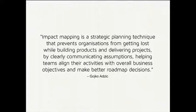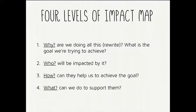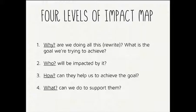Human minds tend to see only one path from beginning to end, but there are multiple alternative ways. Impact mapping has four different questions or levels, using a mind-mapping technique where you layer information on top. The first question is: why are we doing all this — what are we trying to achieve? The second: who will be impacted by this project — who are the actors or stakeholders? Third: how can they help us achieve the goal? You see the approach switches its center from focusing on features to helping certain behaviors emerge. And only the last question is: what can we do to support them?